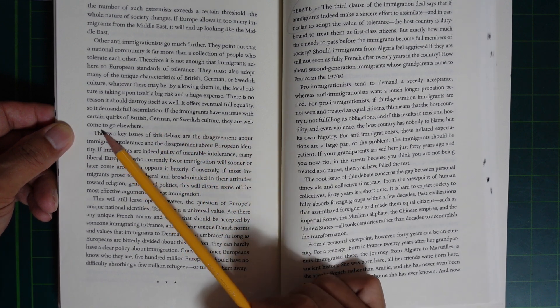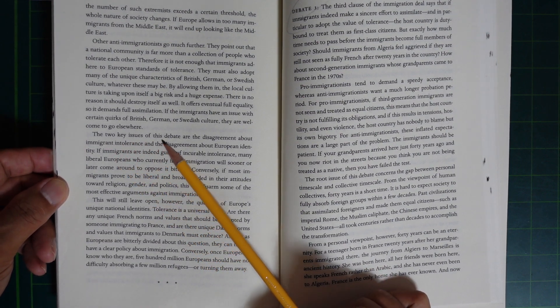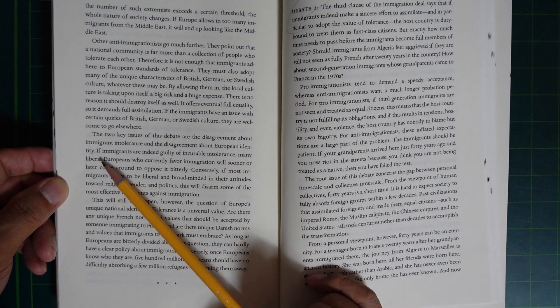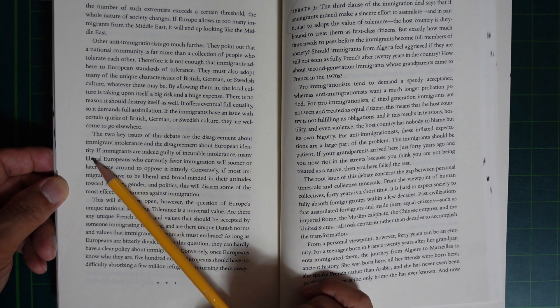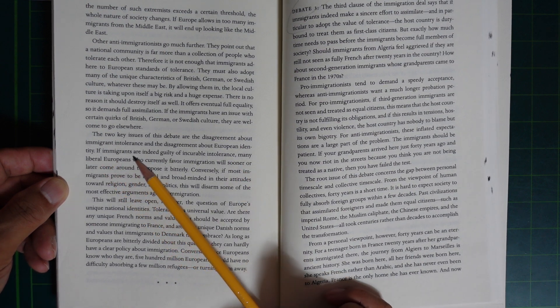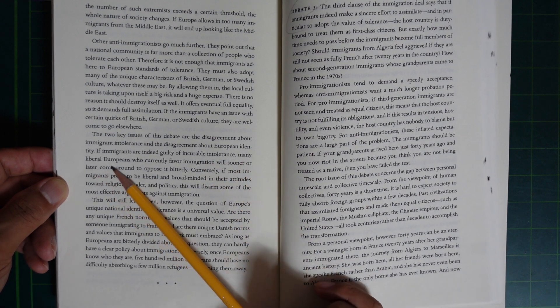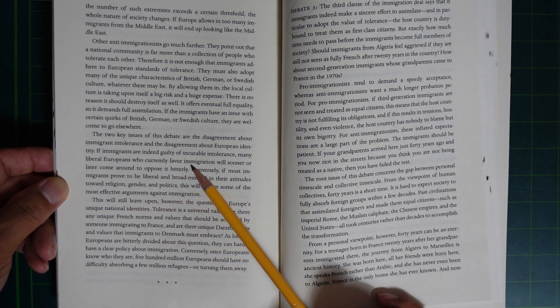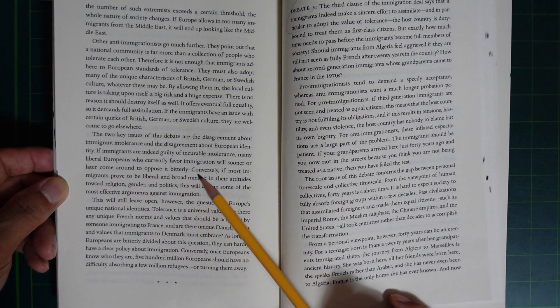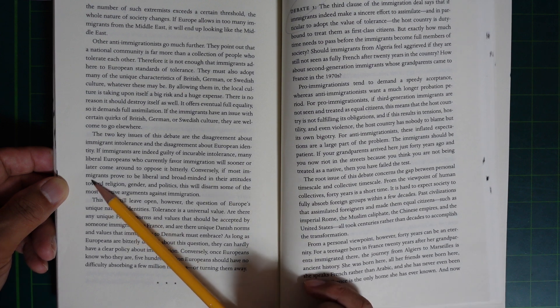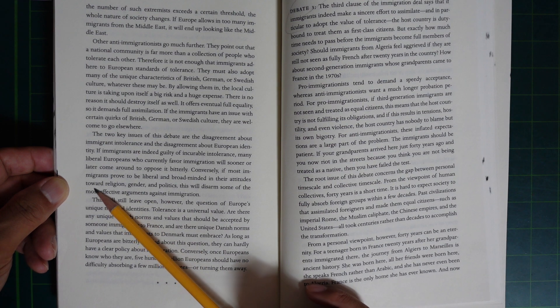The two key issues of this debate are the disagreement about immigrant intolerance and the disagreement about European identity. If immigrants are indeed guilty of incurable intolerance, many liberal Europeans who currently favor immigration will sooner or later come around to bitterly oppose it. Conversely,